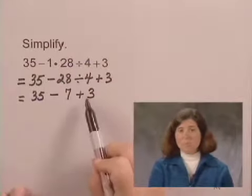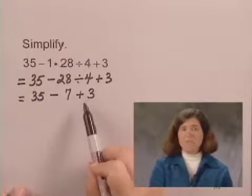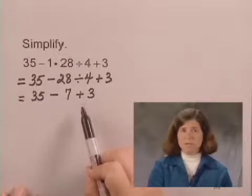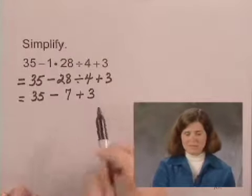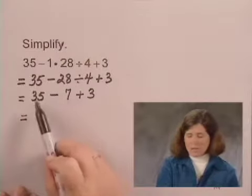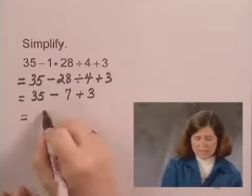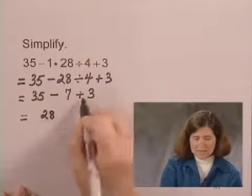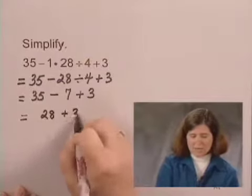There are no more multiplications or divisions, so now I perform all additions and subtractions in order as I see them from left to right. The first operation is subtraction. 35 minus 7 is 28, and I add the plus 3.